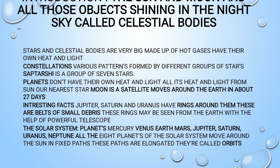Stars are made up of hot gases; they have their own heat and light. Celestial bodies have their own heat and light, meaning they do not depend on any other source. Constellations are patterns formed by different groups of stars — like Saptarishi Mandala, which is a group of seven stars. Planets, unlike stars, do not have their own heat and light.